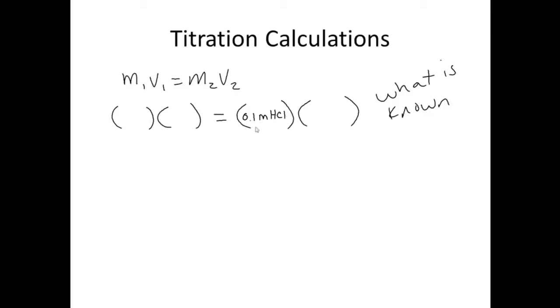We know that molar concentration and we know that we have 10 mils of it. And we know that we are using 6.6 mils and we will solve for M1. So if we divide this side by 6.6 mils.